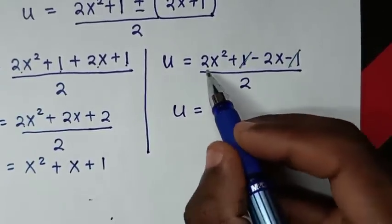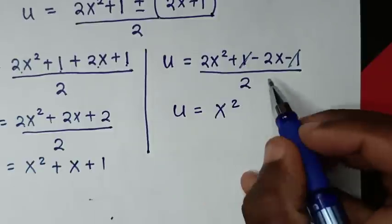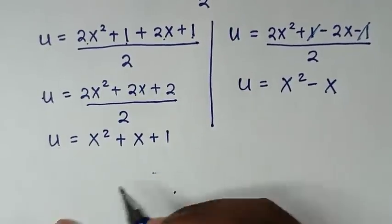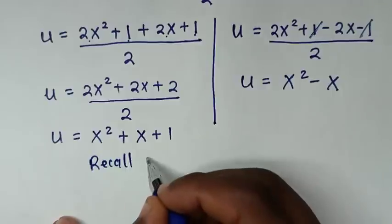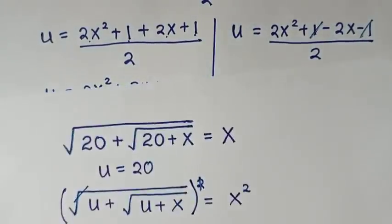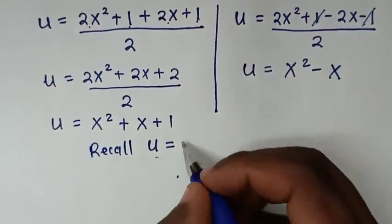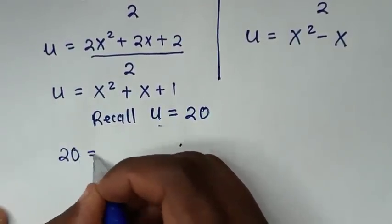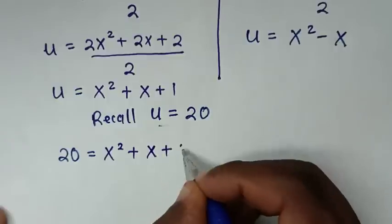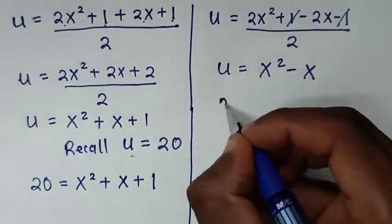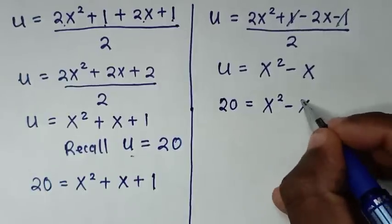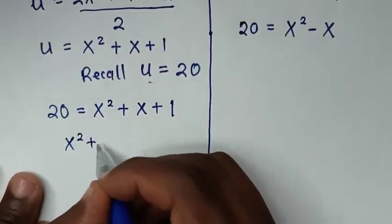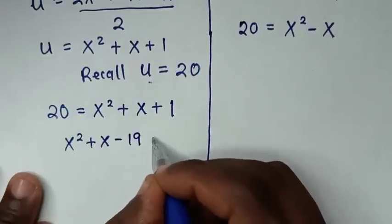Simplifying: for the first value, u equals 2x squared plus 2x plus 2, divided by 2, which gives x squared plus x plus 1. For the second value, the 1 and negative 1 cancel, so u equals 2x squared minus 2x divided by 2, which is x squared minus x. Recalling that we let u equal 20, substituting gives: 20 equals x squared plus x plus 1, and 20 equals x squared minus x.